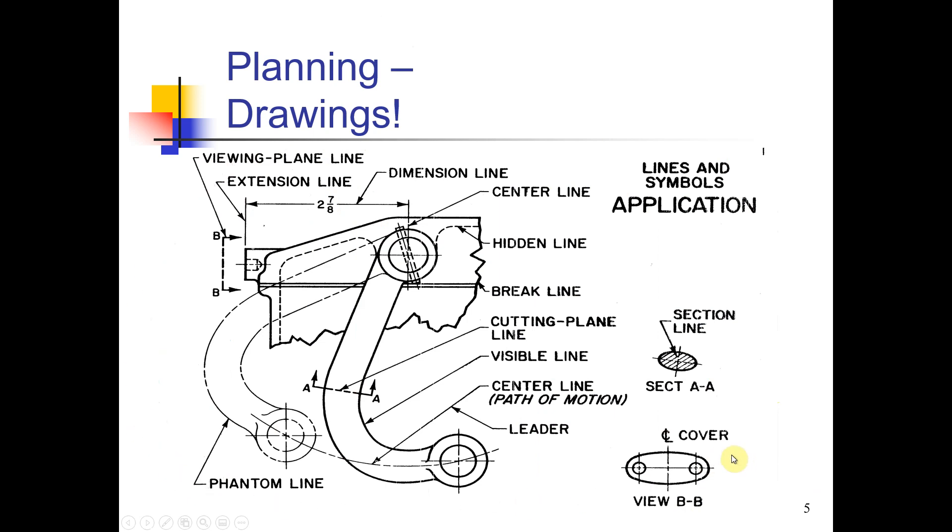By the way, this is a good little drawing to show you the different lines and how they're used: cutting plane line, phantom line, center line, path of motion, hidden lines, visible lines—the strong visible ones—extension lines, viewing plane line, which is almost the same as the cutting plane line. Section lines and so forth. As you're learning your engineering graphics now, you know what the lines should look like, their approximate weight.